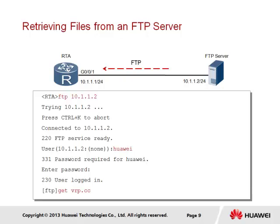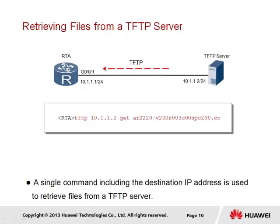The command 'get vrp.cc' allows the client to retrieve a copy of the file named vrp.cc from the FTP server. In the case of a TFTP server, the connection establishment is more transparent, since it is carried out as part of the TFTP file transfer process. The TFTP process is initiated through the 'tftp' command, with the destination server and the file to be transferred specified. The file is reliably transferred through acknowledgements sent by TFTP rather than through TCP.